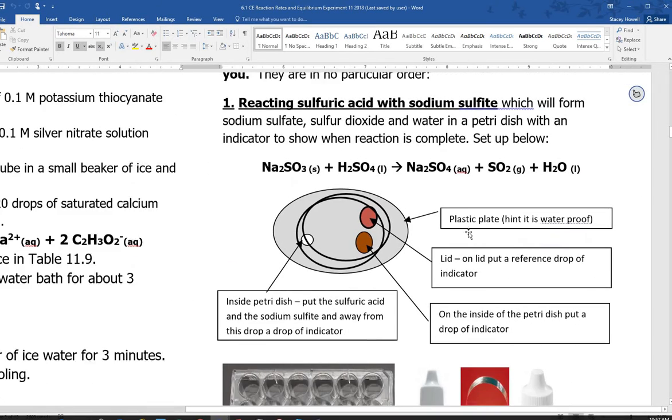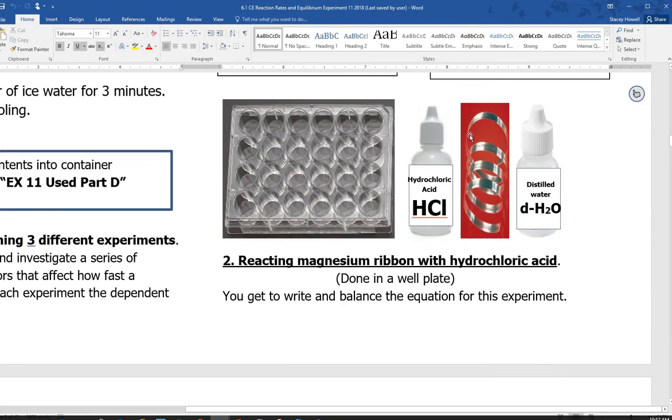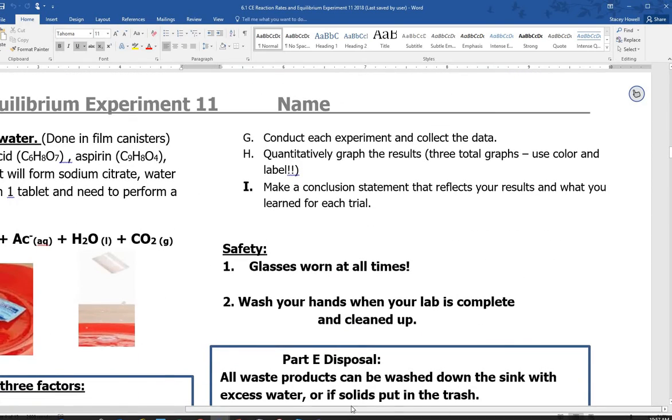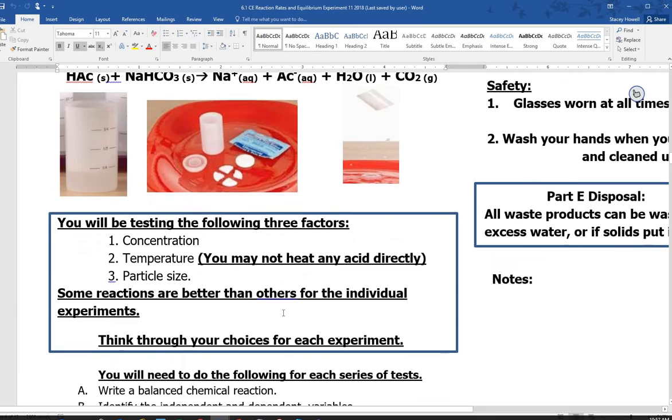So you need to have chosen and written the procedure and done the data table and got the graph ready to go on the reacting with sulfuric acid and sulfite, with reacting magnesium ribbon and hydrochloric acid, with reacting the Alka-Seltzer with water. Those need to all be cleared before you're going back into lab.